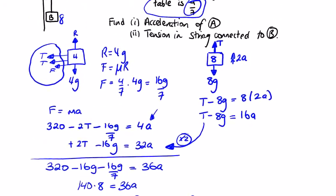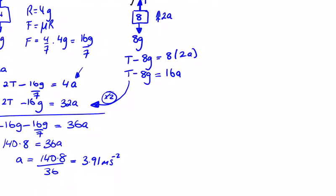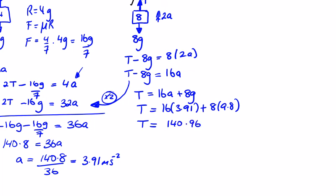And the second part, we were asked to find the tension in the string connected to B. Well, the tension in the string connected to B is T equals 16a plus 8g. That's 16 by 3.91 plus 8 by 9.8. And we type that into our calculator, we are going to get 146.96 Newtons.